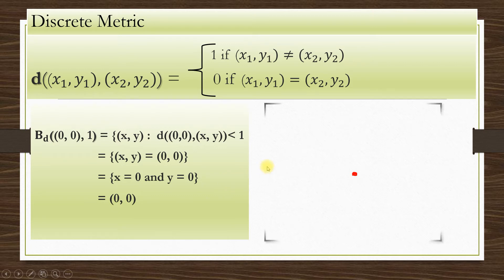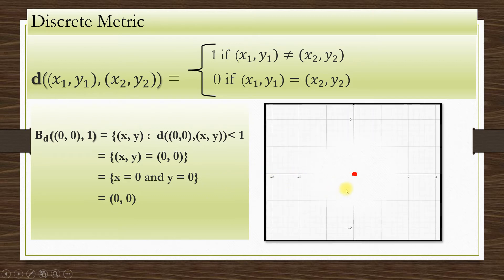Therefore, the pictorial representation is a single point. This is the open ball with center (0, 0) and radius 1 with respect to the discrete metric.